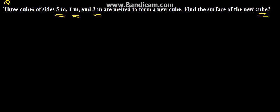Here we have been given three cubes. Suppose this is the first cube with side 5 meters, this is the second cube with 4 meters, and this is the third cube with 3 meters. They are melted to form a new cube. We need to find the surface area.